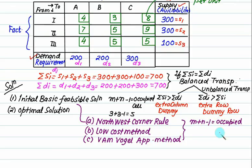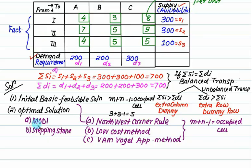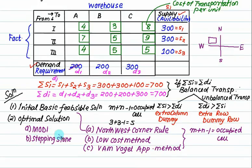The initial basic feasible solution is not always the final solution — it just checks that allocation equals m plus n minus 1. Once this is done, the optimal solution is prepared by two methods: the Modified Distribution (MODI) method, or the Stepping Stone method.